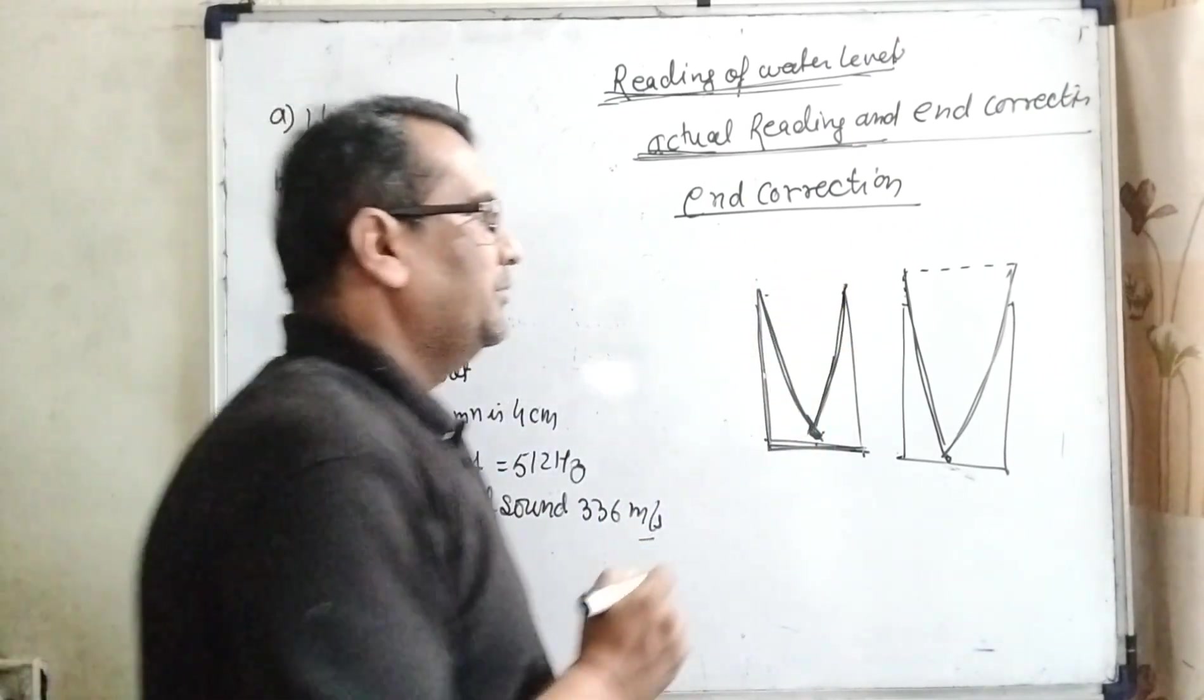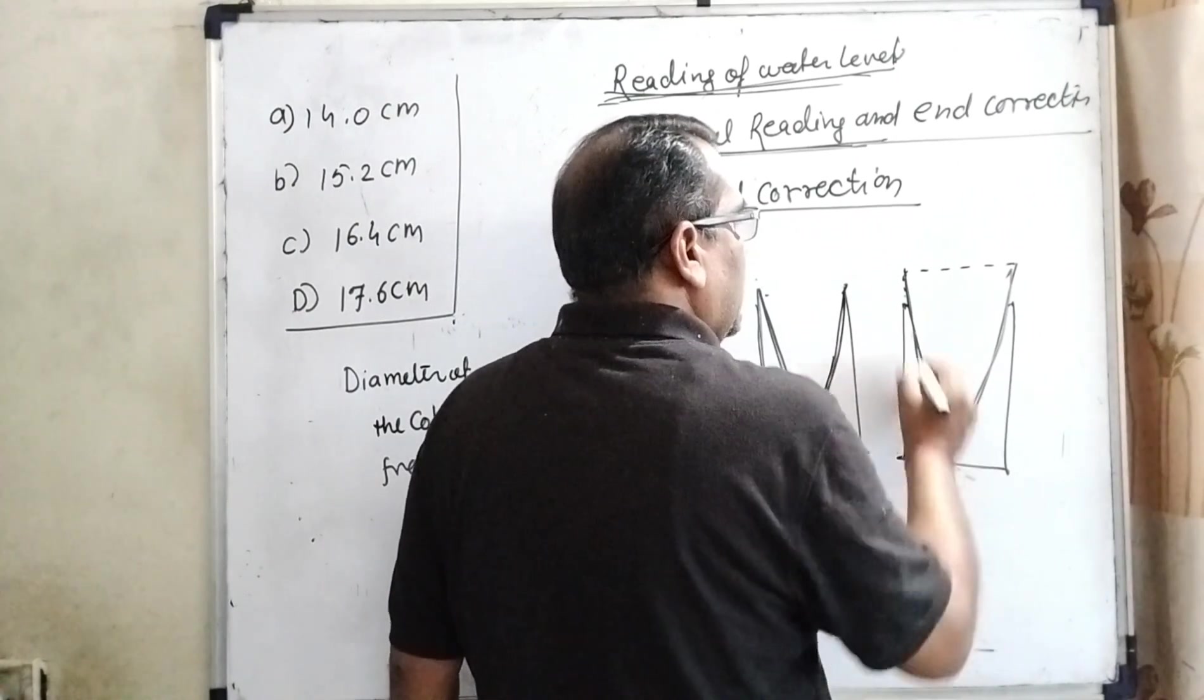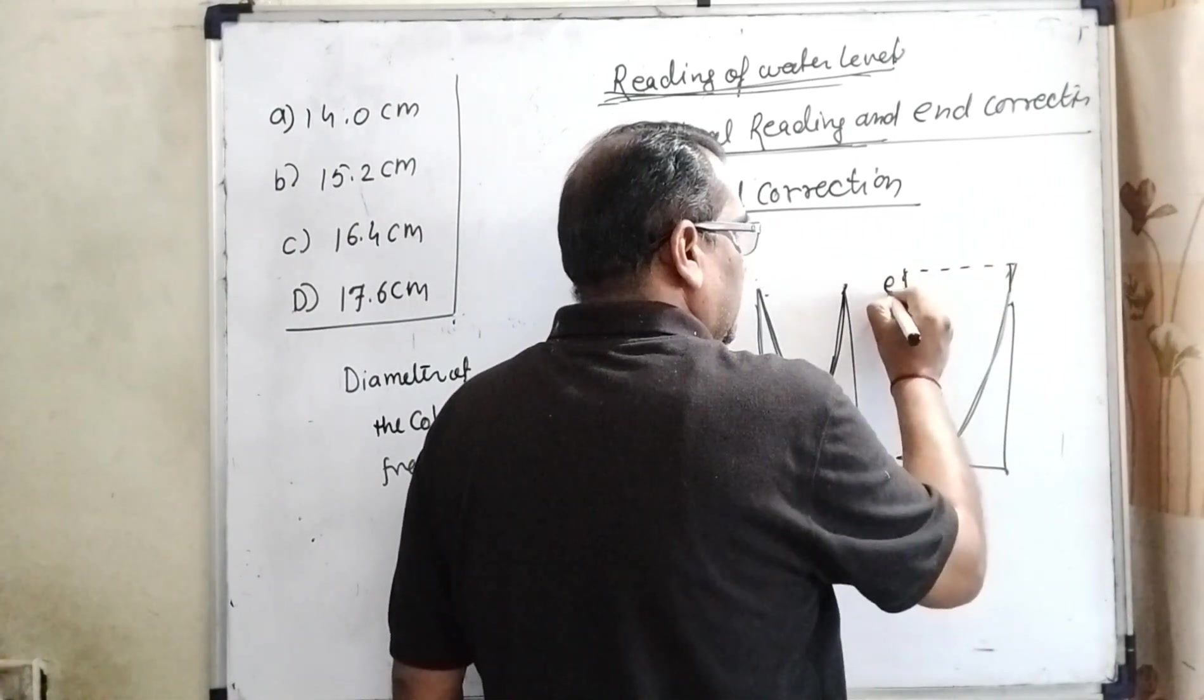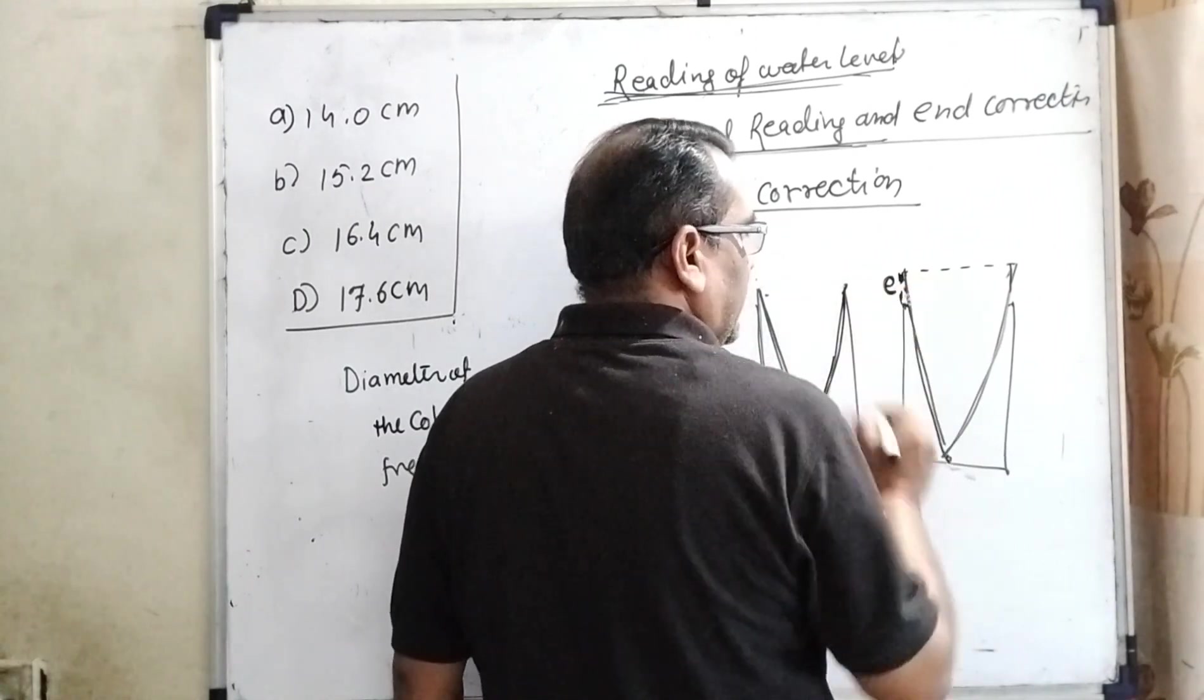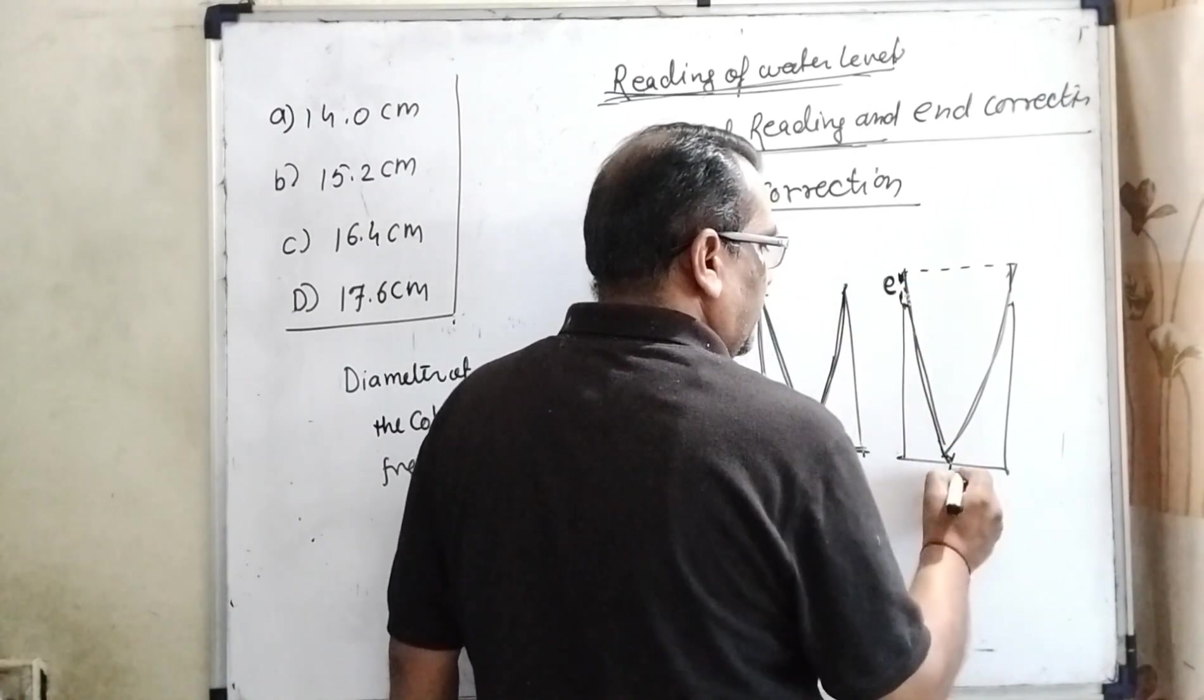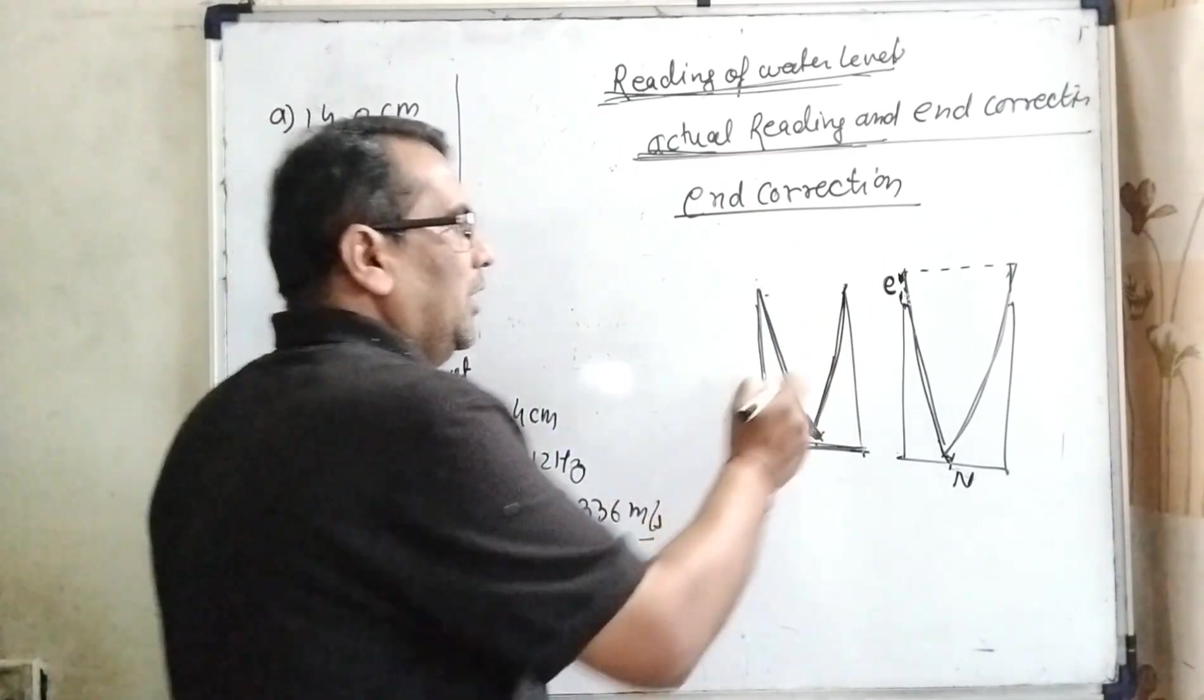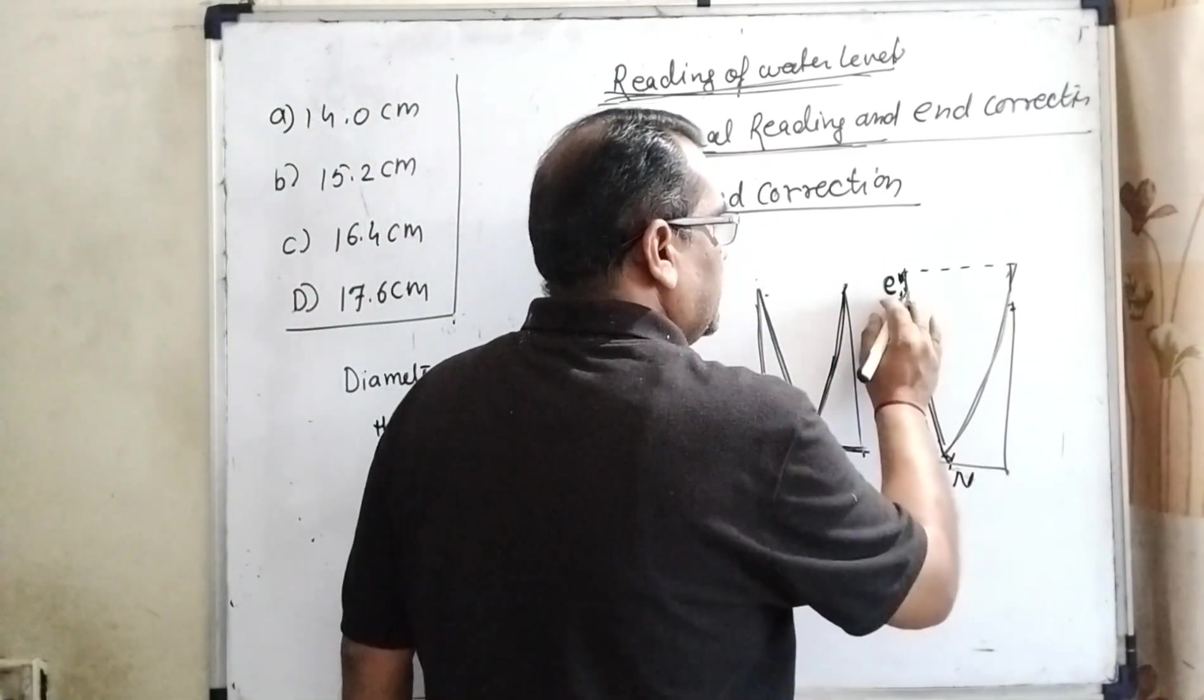But in practice, antinodes form some distance outside. This is called end correction. Because nodes are at the same position, but antinodes are somewhere outside of this tube. This is the end correction.